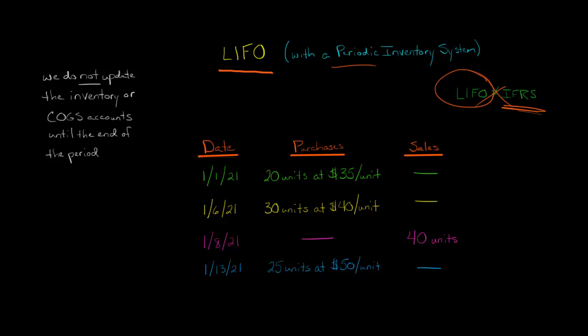How do we calculate cost of goods sold and ending inventory from this information? That's what we're going to use LIFO to figure out. Remember that LIFO means last in, first out. So the last purchases are going to be the ones that are first to cost of goods sold. Here's the catch, though.